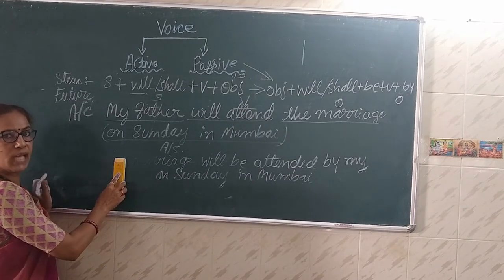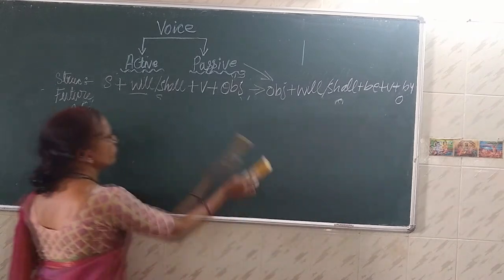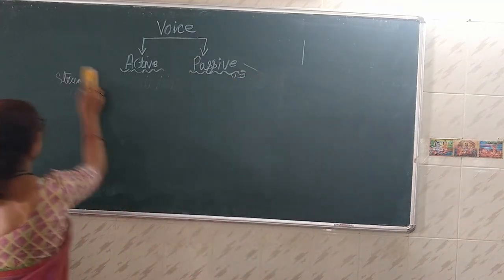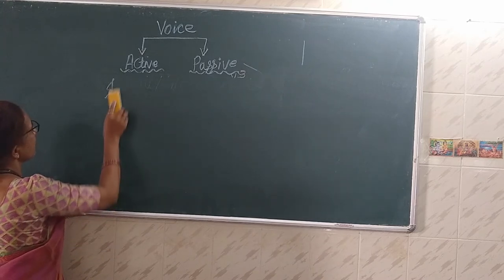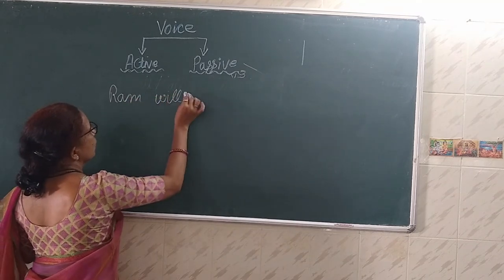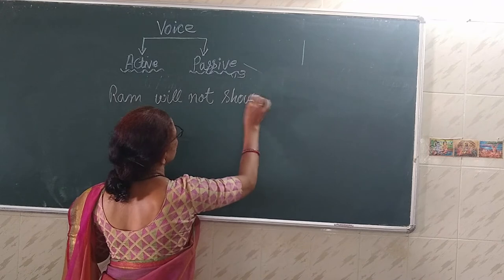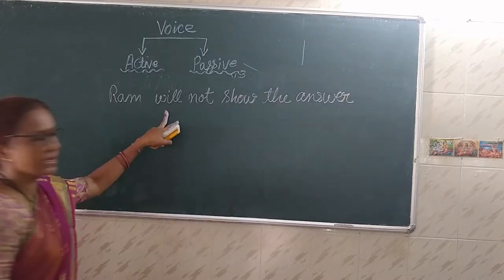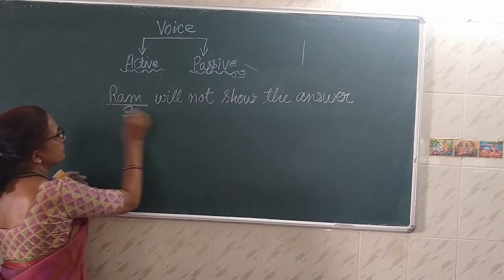Now let us take negative sentences for all three tenses. Future tense negative: 'Ram will not show the answer.' 'Ram' is the subject, 'will not show' is the verb (negative), and 'the answer' is the object. In passive, 'not' remains as it is. So the passive is: 'The answer will not be shown by Ram.' The structure of negative passive follows the same rule — 'will not be' plus V3.